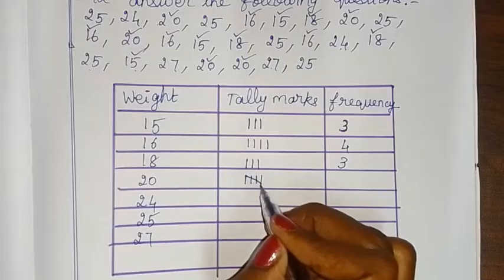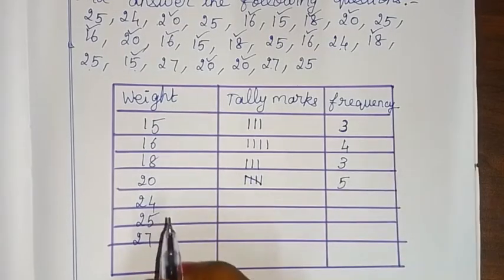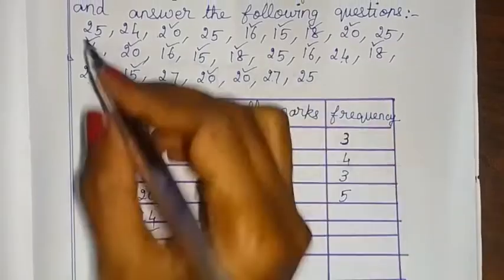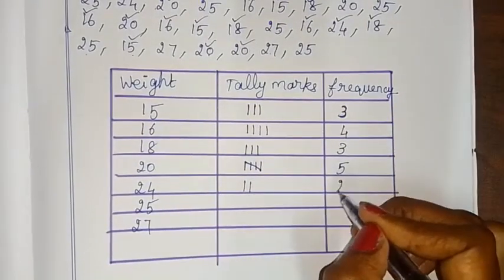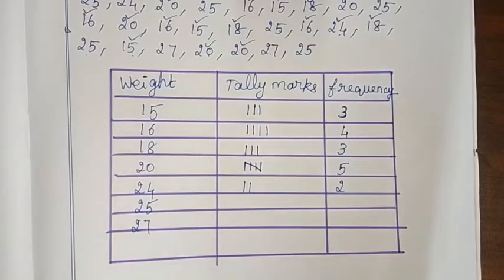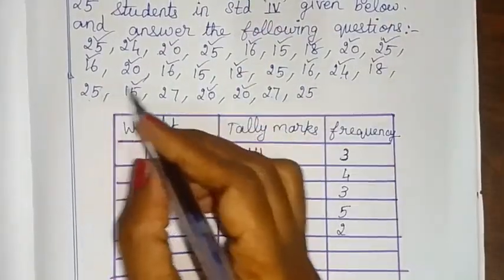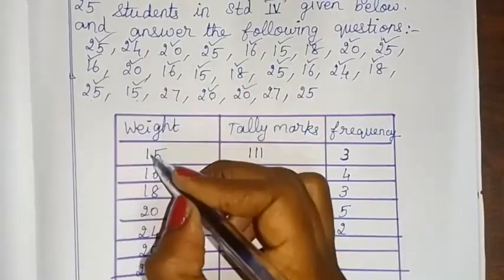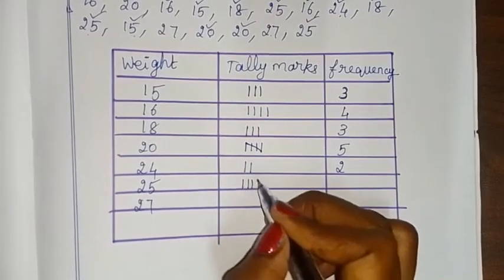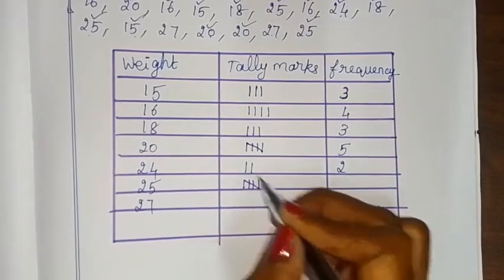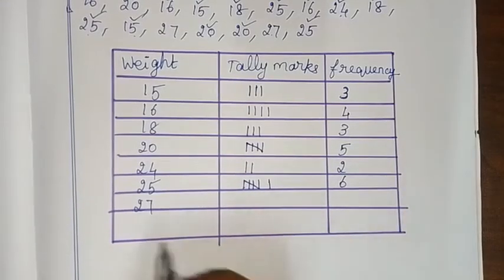Continuing with the tally marks: for 20 kg, the tally count gives frequency 5. For 25 kg, the tally count gives frequency 6. For 27 kg, the tally count gives frequency 2. The total adds up to 25 students, confirming all entries in the frequency distribution table are complete.